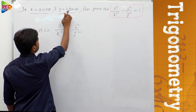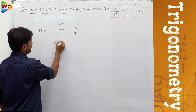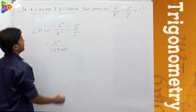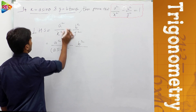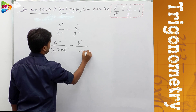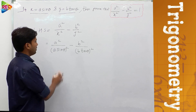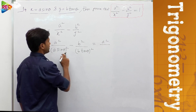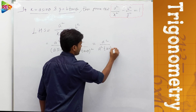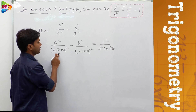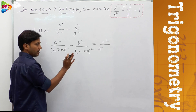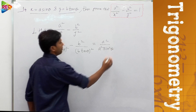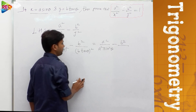Now substitute the values of x and y. The value of x is a sin θ and y is b tan θ. So we get a² divided by (a sin θ)² minus b² divided by (b tan θ)². This simplifies to a² over a² sin²θ minus b² over b² tan²θ.